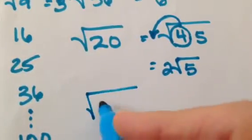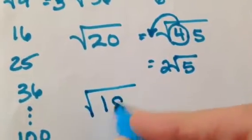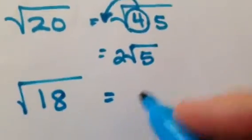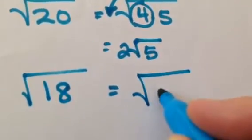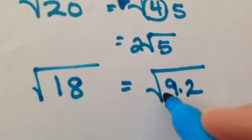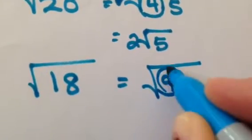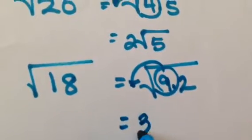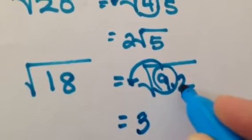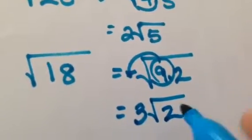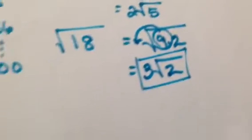Let's try another one. What about the square root of 18? Is there a perfect square in there? Yes — 9. 9 is perfect. I could write that as 9 times 2. The square root of 9 can be pulled out; when it comes out, it becomes a 3. And 2 is not perfect, so it has to stay underneath that radical sign. So your answer would be 3 square roots of 2.